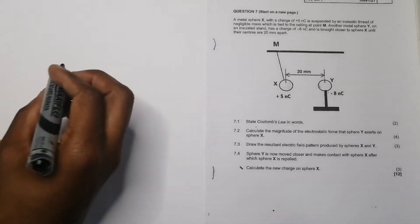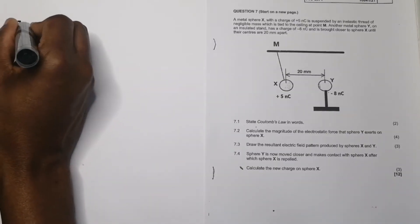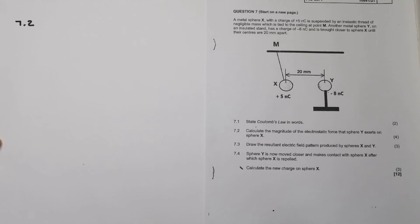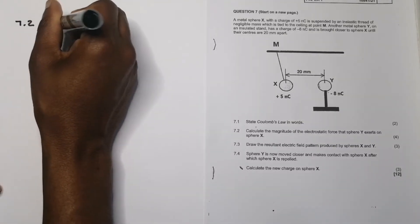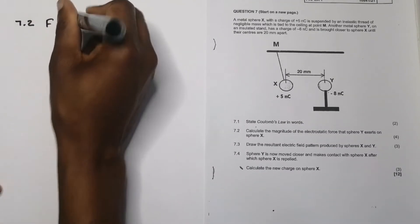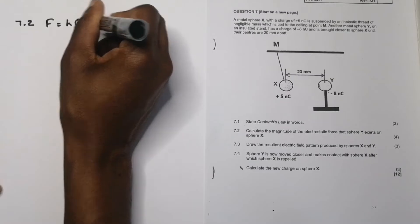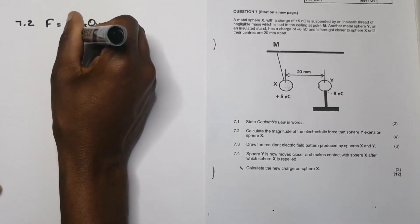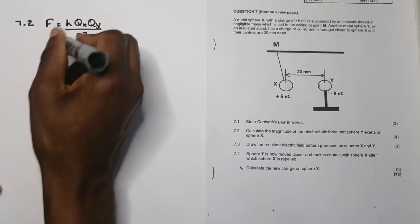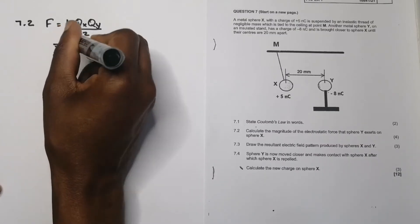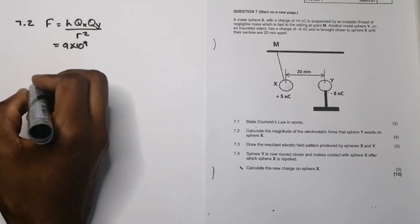So 7.2, they say calculate the magnitude of the electrostatic force that sphere Y exerts on sphere X. Come on. These are free marks. So we know we're going to use Coulomb's law. So F equals K Q_X and Q_Y divided by R squared.